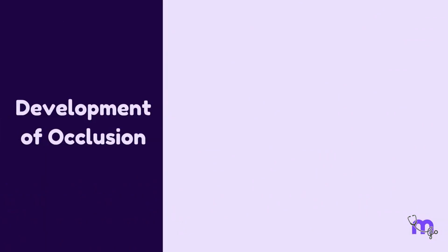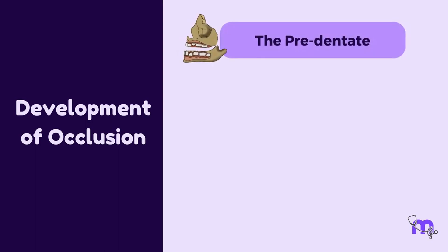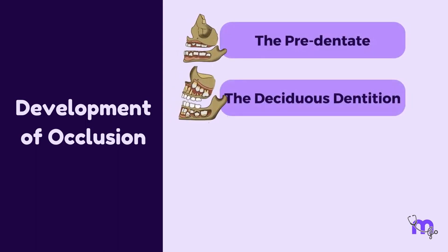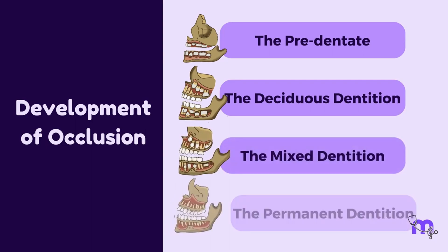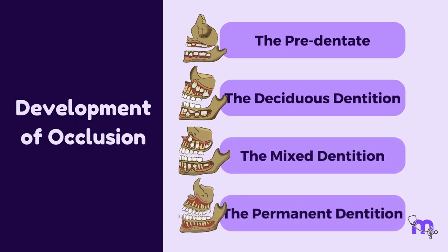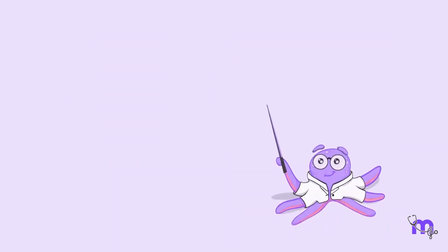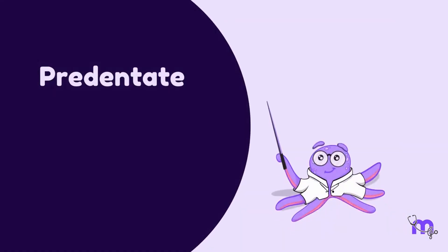The development of occlusion takes place in four stages: the pre-dentate, the deciduous dentition, the mixed dentition, and the permanent dentition stage. In this video, we are going to learn about the pre-dentate or gum pad stage.